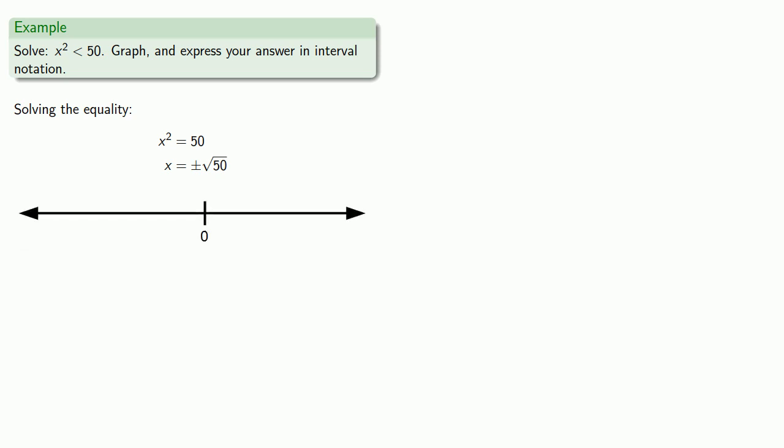We'll just set down a number line. We know that positive square root of 50 is a positive number, so it's someplace to the right of 0. We'll plot it first, but then we'll be sure to label it square root 50. Likewise, negative square root of 50 is a negative number, and it's somewhere to the left of 0.